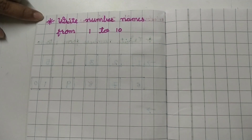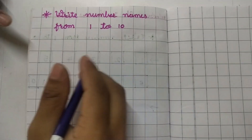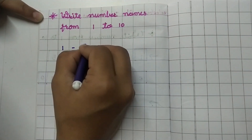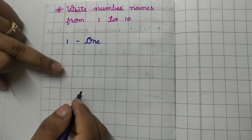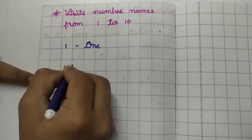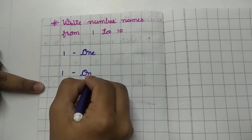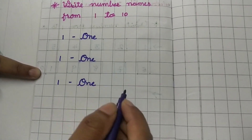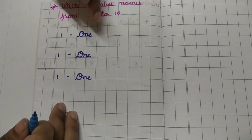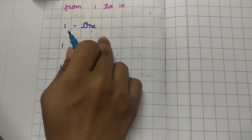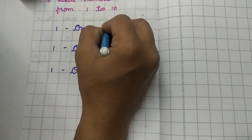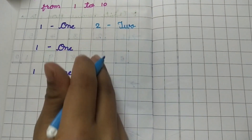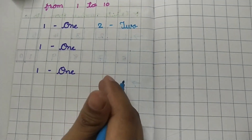Now we will write the number name. Write down first number 1 — ONE — 1. You have to write 3 times. Now leave 1 line and write down number 2 — TWO — 2. You will write 3 times.